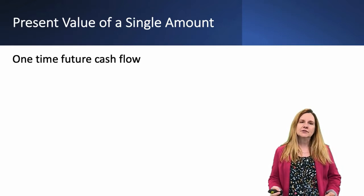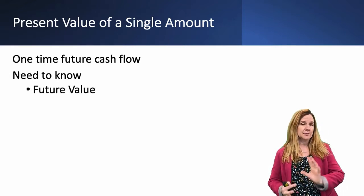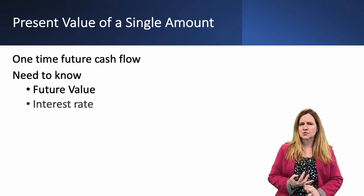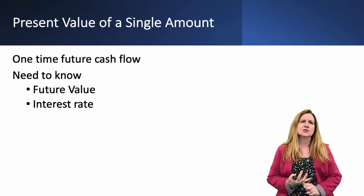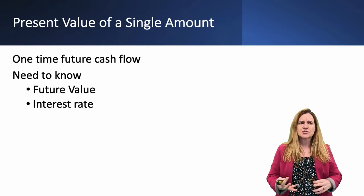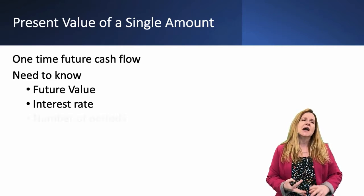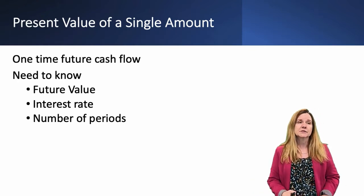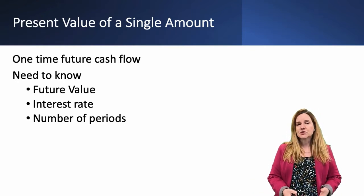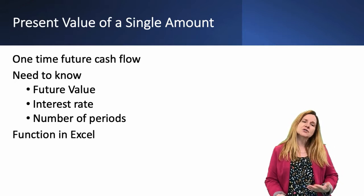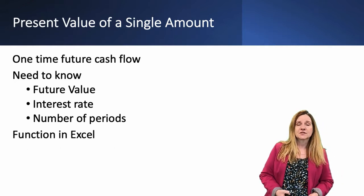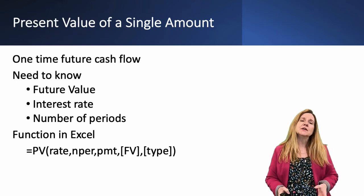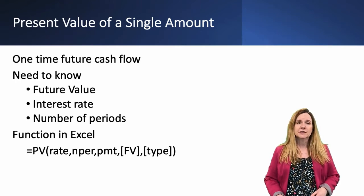In order to calculate, you need to know the future value — that would be the $1,000 you're going to get in the future — the interest rate being applied, which is usually the current going interest rate, and the number of periods — how long do you have to wait for those $1,000. We're going to look at examples using Excel, and the function we'll use is the present value function.